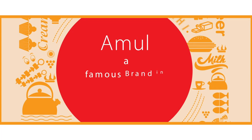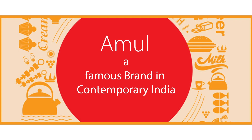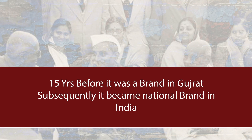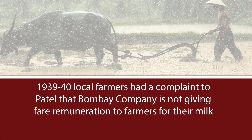Amul is a well-known brand in contemporary India. It was primarily a Gujarat brand 10-15 years ago, but has since become a national brand known all over India. However, how it all began is not widely known. The cooperative movement started with complaints from farmers of Gujarat, where the Amul factory is now located. The local farmers in 1939-40 complained to Patel that the Bombay company was not giving fair remuneration for their milk.